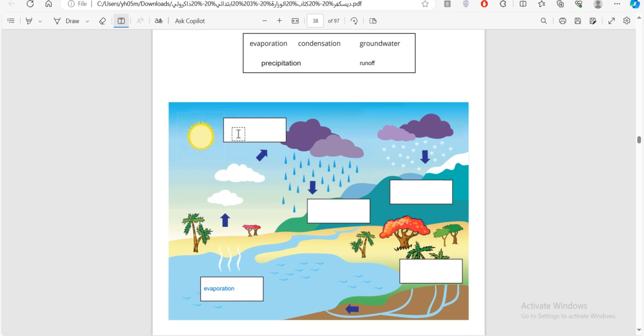Here, what's happening? The water is up in the sky now, and it becomes collected together as many, many clouds. What do we call this? Condensation, groundwater, precipitation, or runoff. Which one is it? Well, this is condensation.